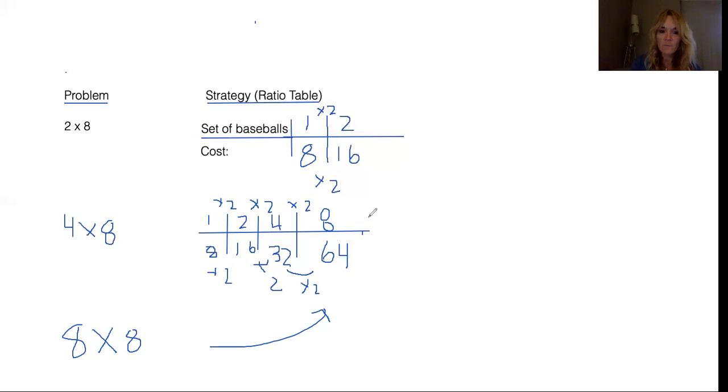Everything in the top row we're multiplying by 8. So 1 times 8 is 8, 2 times 8 is 16, 4 times 8 is 32, and 8 times 8 is 64.